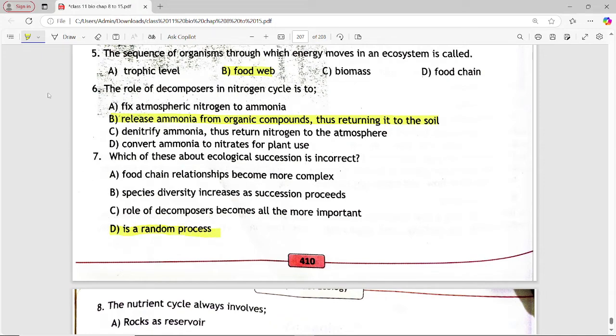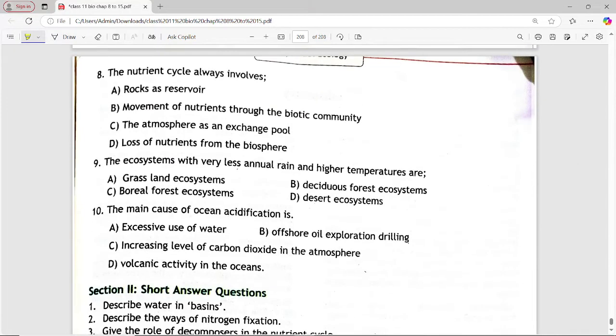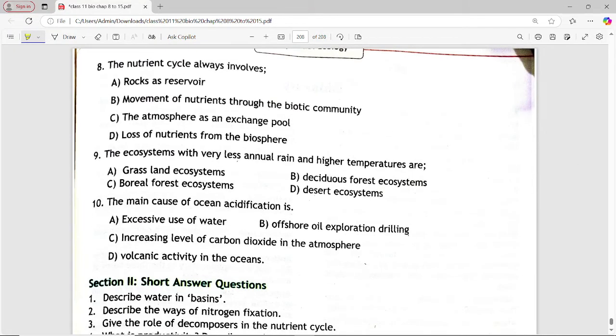Next MCQ is, the nutrient cycle always involved. Options are rock as reservoir, movement of nutrient to biotic community, atmosphere as an exchange pool, loss of nutrients from biosphere. So students, this means which is the step of the nutrient cycle?